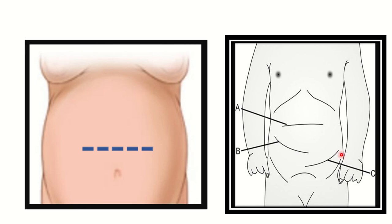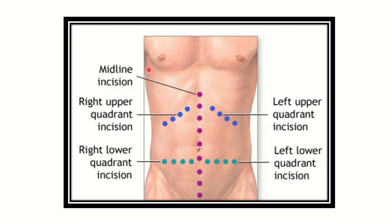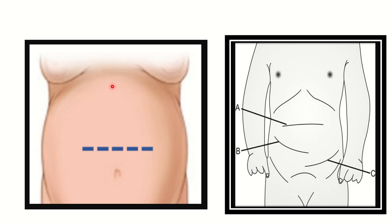For a six-day-old child, usually for better exposure in the case of an adult a midline incision is made. But in the case of a very small child, to gain better access there should be an incision given supraumbilical or infraumbilical — a transverse incision. A transverse incision gives a better view for a neonatal child for the operation.